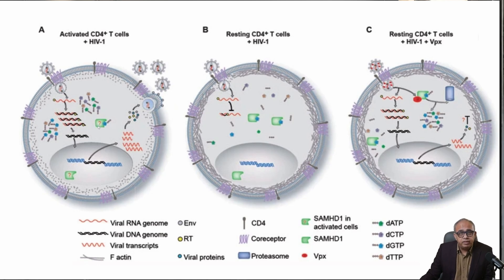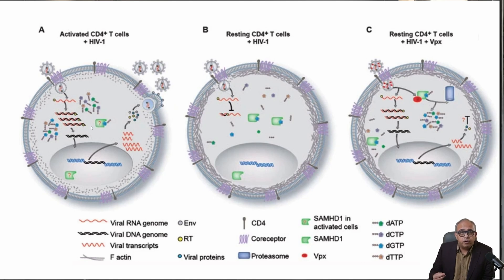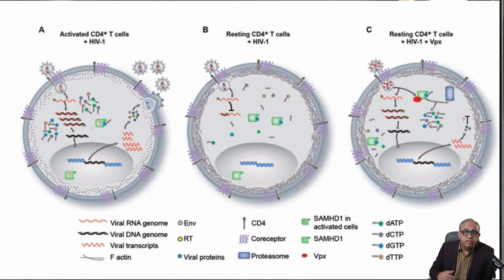SAMHD1 is Sterile Alpha Motif and HD Domain-containing Protein 1. It plays a crucial role in restricting HIV replication in CD4 T-cells. SAMHD1 possesses dNTP triphosphohydrolase activity, which means it can degrade deoxynucleotide triphosphates (dNTPs) into deoxynucleosides and inorganic triphosphates.